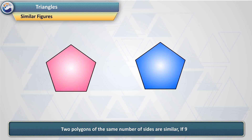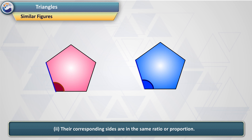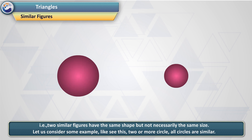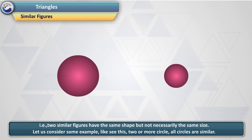Similar figures. Two polygons of the same number of sides are similar if: 1, their corresponding angles are equal, and 2, their corresponding sides are in the same ratio or proportion. That is, two similar figures have the same shape but not necessarily the same size.